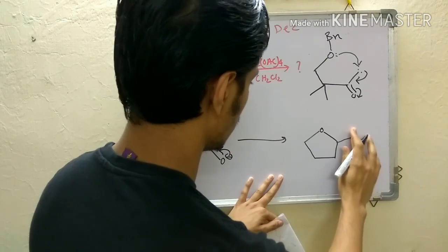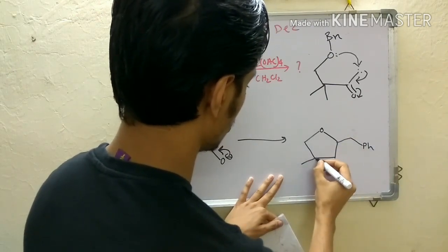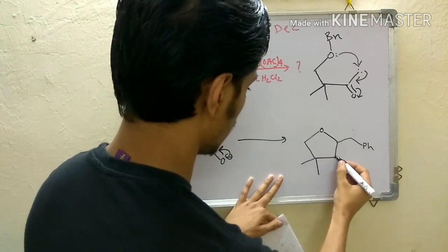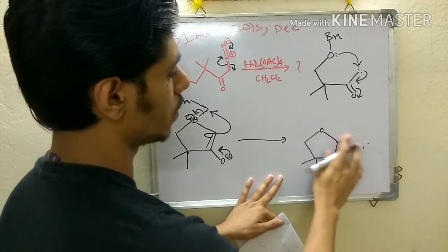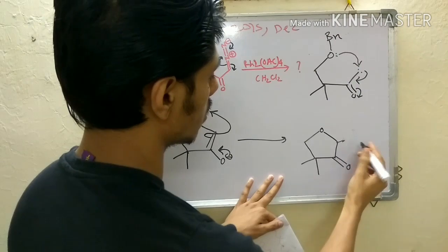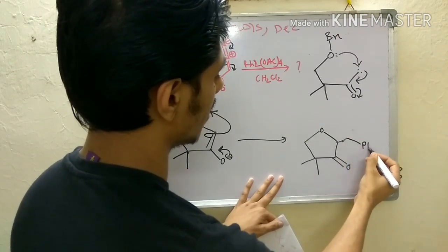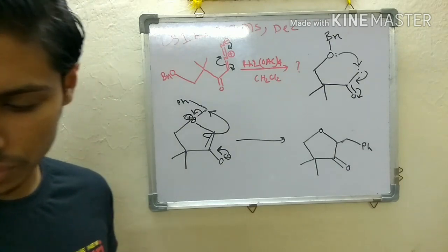So it is a good leaving group and you can get the following product - you have Ph, you have your two methyl groups and your double bond. Now this group is nothing but OBn group or benzyl group so you can write Bn here or you can just write Ph also.